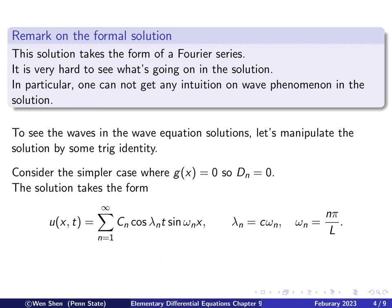To fix the idea, let's consider a simpler case: set g to be zero, meaning the initial motion has zero speed. You are displacing the string a little from equilibrium and then letting go from zero velocity. Therefore all the d_n's are zero, and we have a simpler form of the solution containing only c_n's: a sum of c_n times cosine(lambda_n t) times sine(omega_n x), where lambda_n equals c times omega_n.